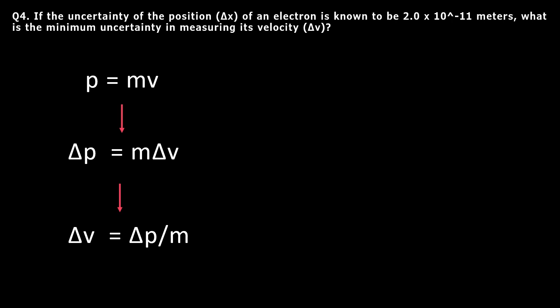We know the mass of an electron, which is 9.11 times 10 to the negative 31 kilograms, but we need to find the momentum uncertainty. So using the Heisenberg Uncertainty equation...